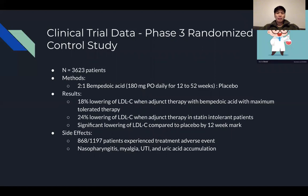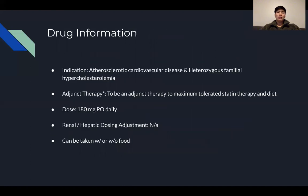There are some side effects with this medication: nasopharyngitis, myalgia, UTI, and the more notable one is uric acid accumulation, since it uses a different pathway. Drug information: indications are for atherosclerotic cardiovascular disease and heterozygous familial hypercholesterolemia. It is adjunct therapy — not for monotherapy — and can be used with both statins and ezetimibe at maximum tolerated doses. The dose is 180 mg by mouth daily. There are currently no adjustments for renal or hepatic dysfunction, and it can be taken with or without food.